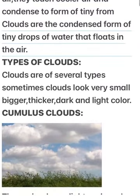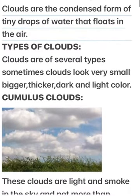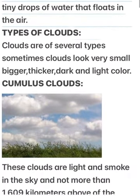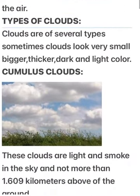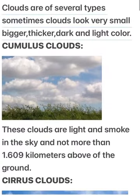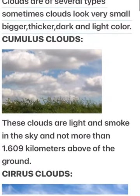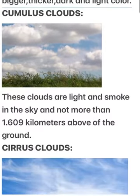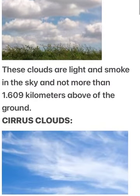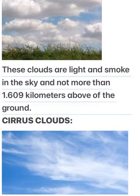Types of clouds. Clouds are of several types — sometimes clouds look very small, bigger, thicker, dark and light in color. Cumulus clouds are light and scattered in the sky and not more than 1.609 km above the ground.